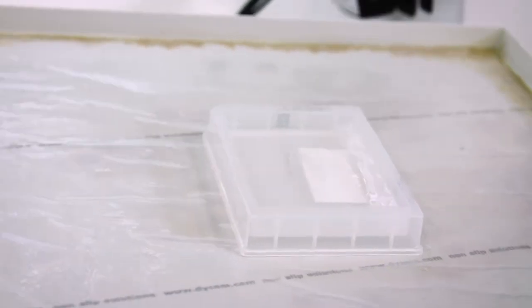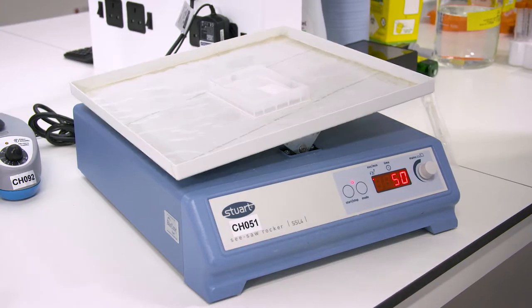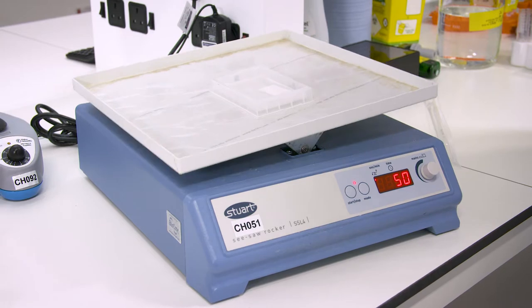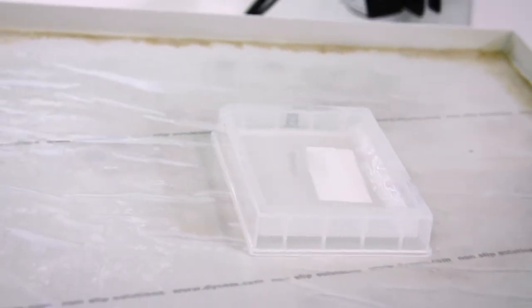An advantage of the fluorescent Western blot method is the ability to detect two separate target proteins without stripping the membrane. For example, the protein of interest and a loading control.